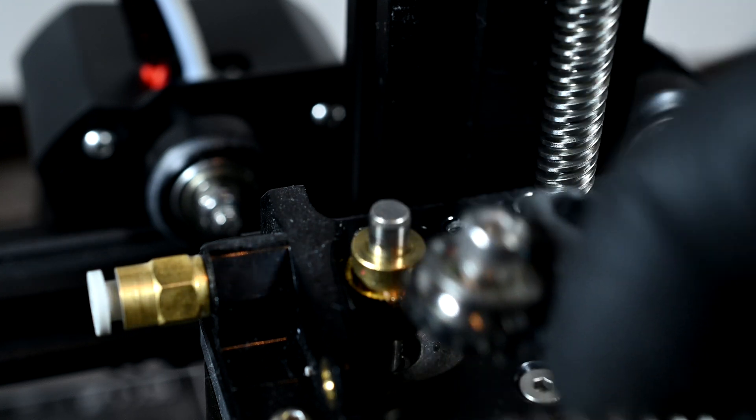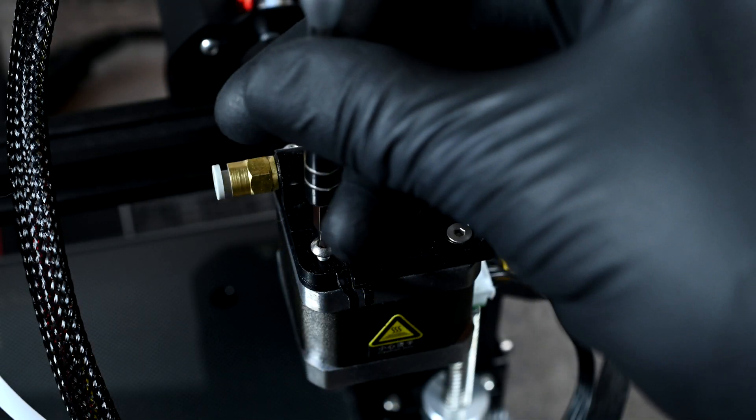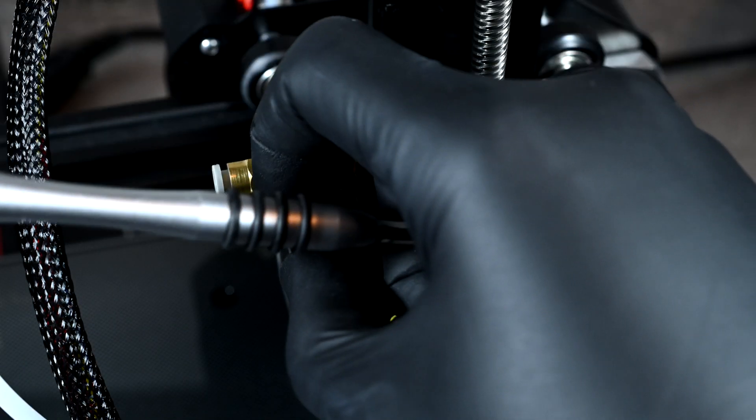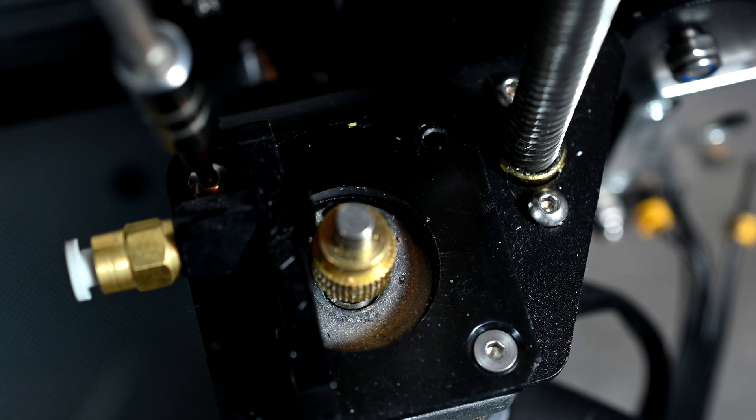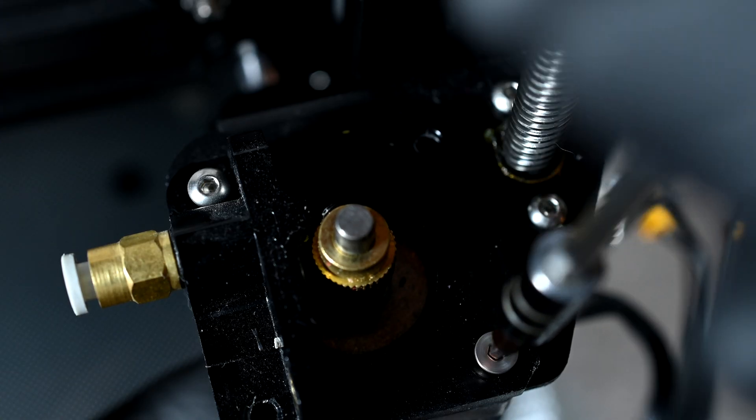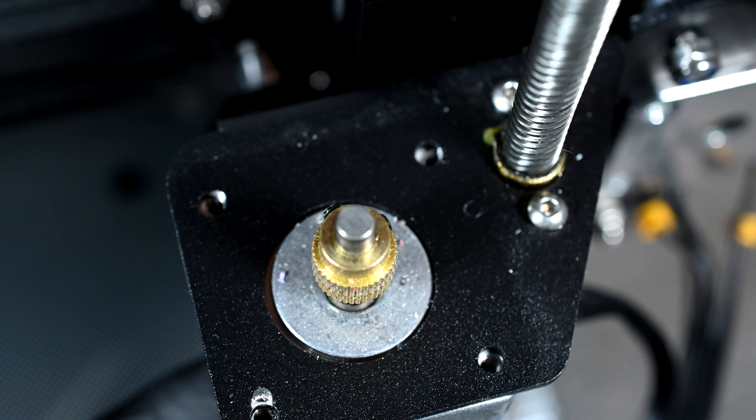Be sure to hold the extrusion spring so it doesn't fly away, though your upgrade kit probably includes one. The M3x10 screws on the extrusion base can now be removed. The second one is a bit harder to get to. Finally, the M3x10 countersunk screw can be removed. Hold onto the motor as this is the last screw securing it to the arm.